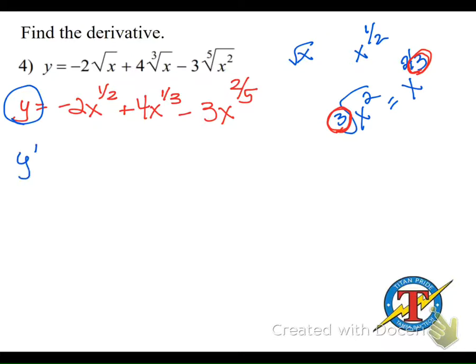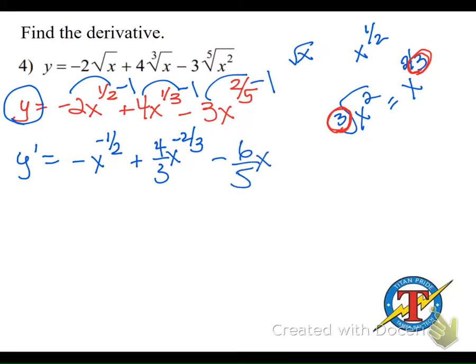Now, treat this problem just like the last one. Hit pause, work it out on your own, and make sure you write your final answer with positive exponents. The first term, we multiply, we get a negative 1, x to the subtract 1. Visualize a common denominator. Treat that 1 like 2 over 2 and you get negative 1-half. Plus, multiply, we're going to get 4-thirds, x to the subtract 1. Treat the 1 like 3-thirds and you get negative 2-thirds. Minus, 2-fifths times 3 is just 6-fifths, x to the subtract 1 in the form of 5 over 5, and you get negative 3-fifths.